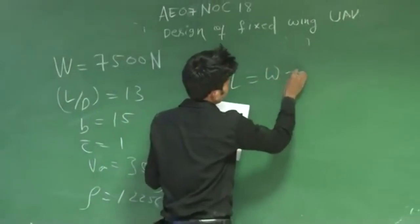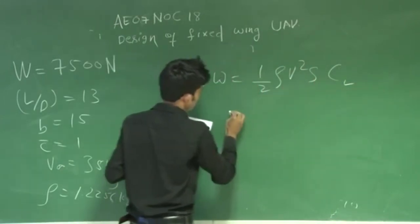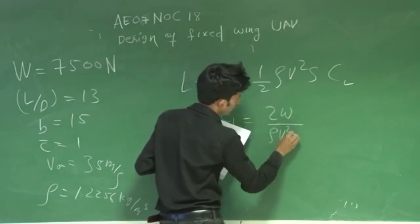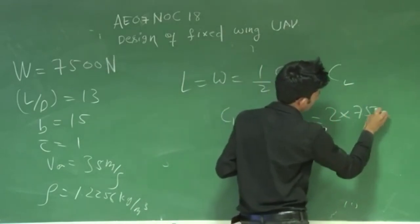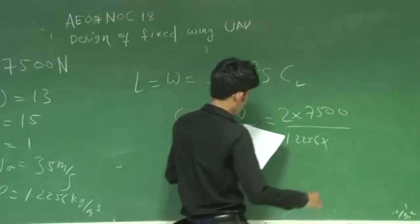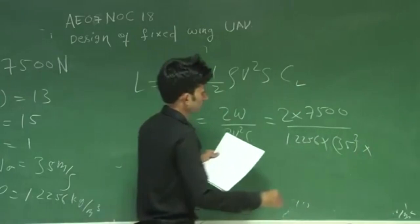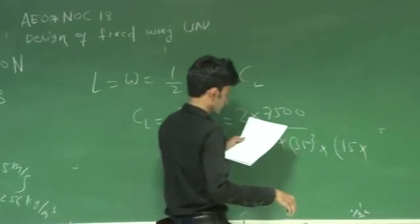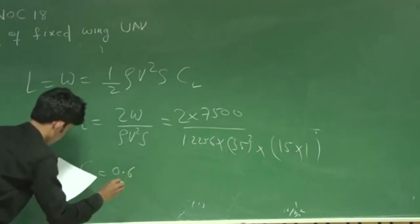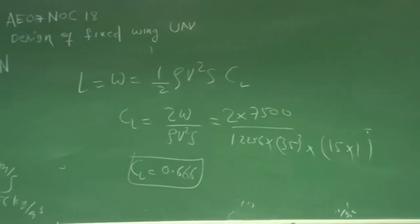Using lift equal to weight: L = half rho V² S × CL. So CL = 2W / (rho V² S). Substituting: 7500 divided by 1.2256 × 35² × (B × C-bar) = 15 × 1. So CL comes out to 0.666.